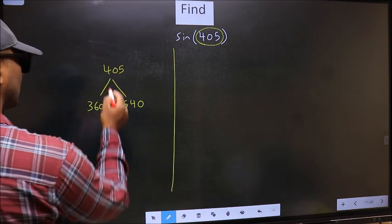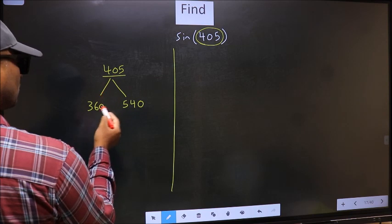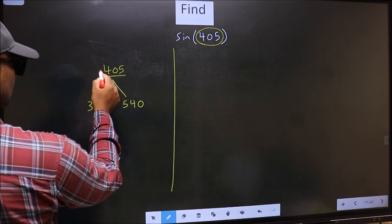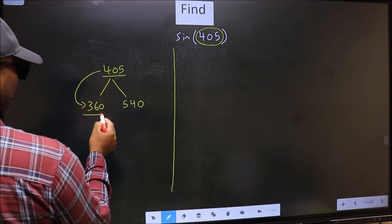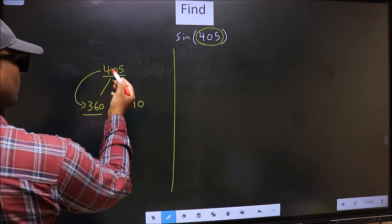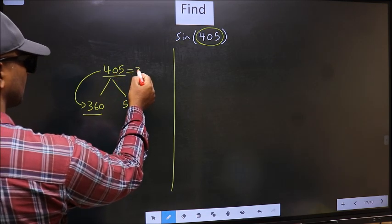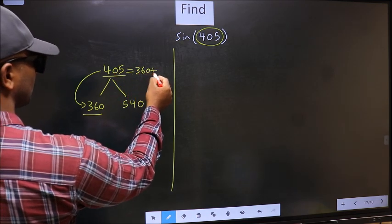Now, 405 is close to which number? This is close to 360. So 405 should be written as 360 plus 45.